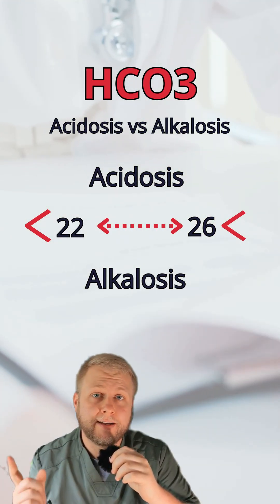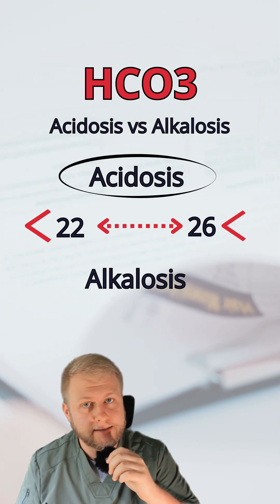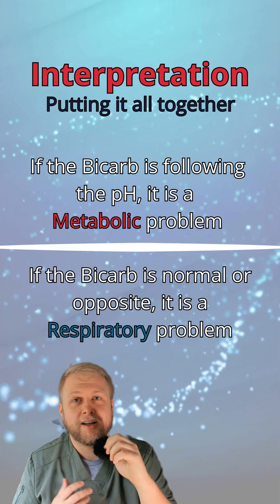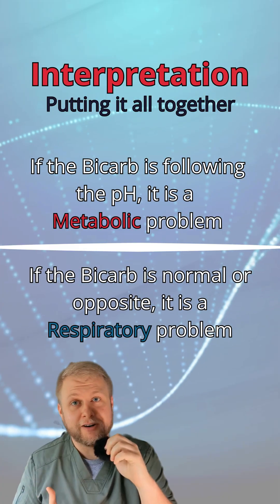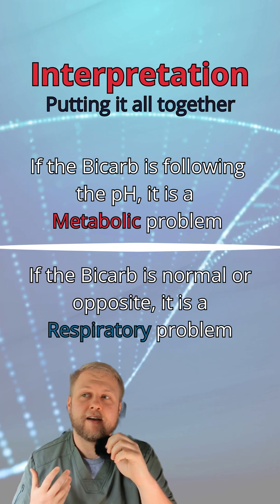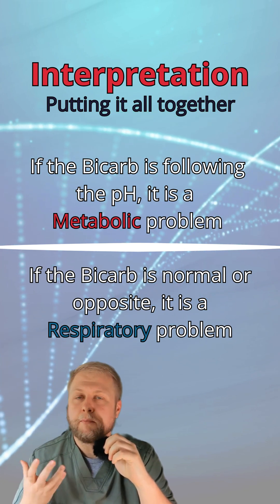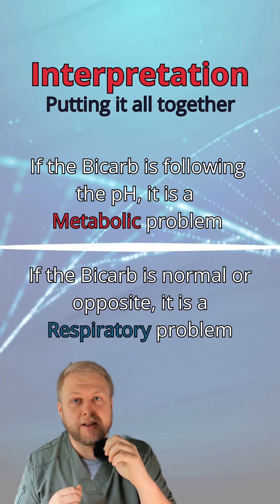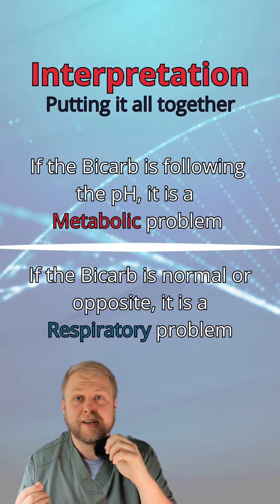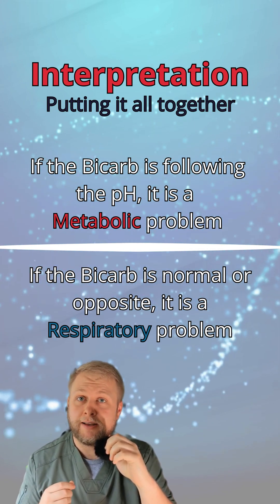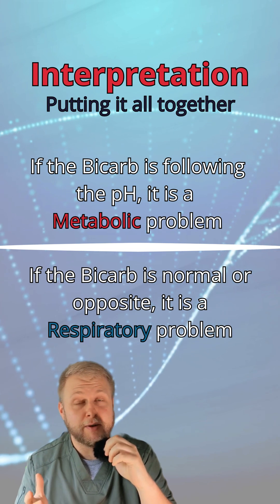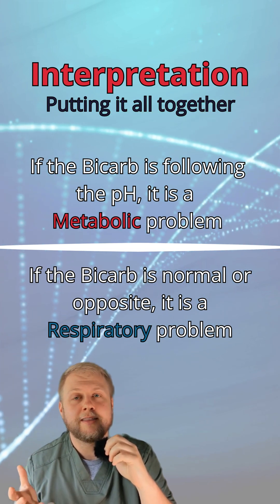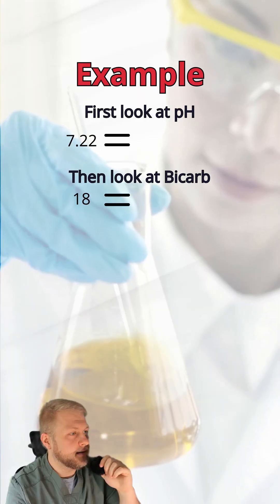Next, let's take a look at that bicarb. Anything lower than 22 is going to be acidosis, and anything higher than 26 is going to be alkalosis. Now let's put it all together — think of them like friends. If the bicarb and the pH are friends, meaning the bicarb is following the pH, it's a metabolic problem. If they are not friends — if the bicarb is not following the pH, or is normal — then it's a respiratory problem.